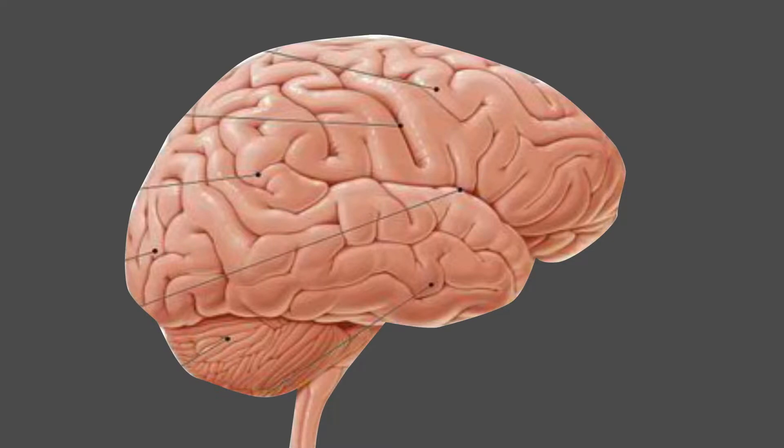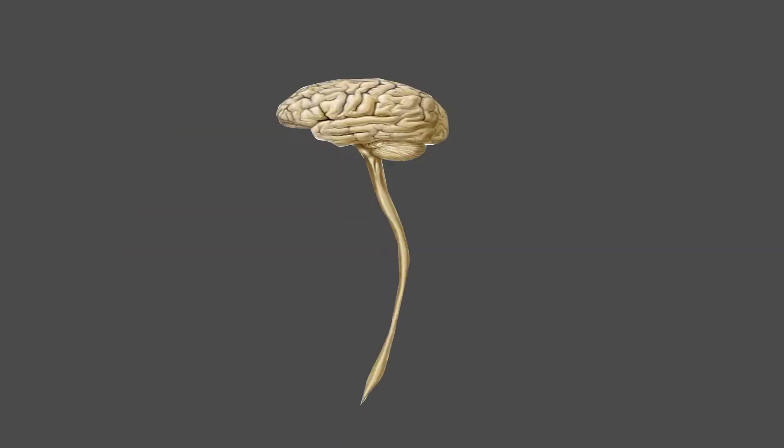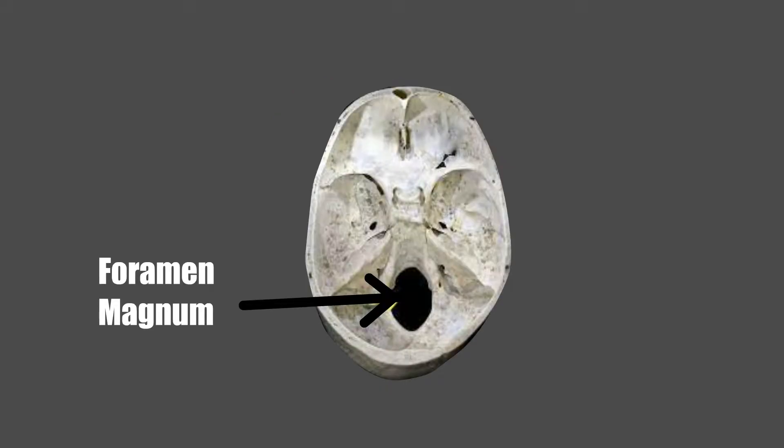The anatomy of the brain. The brain is that part of the central nervous system that lies inside the cranial cavity. It is continuous with the spinal cord through the foramen magnum.